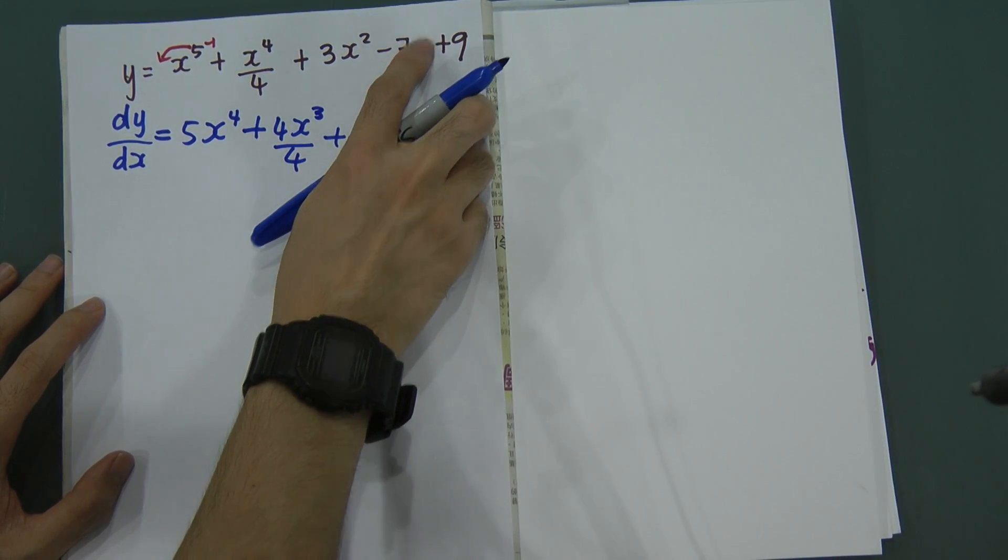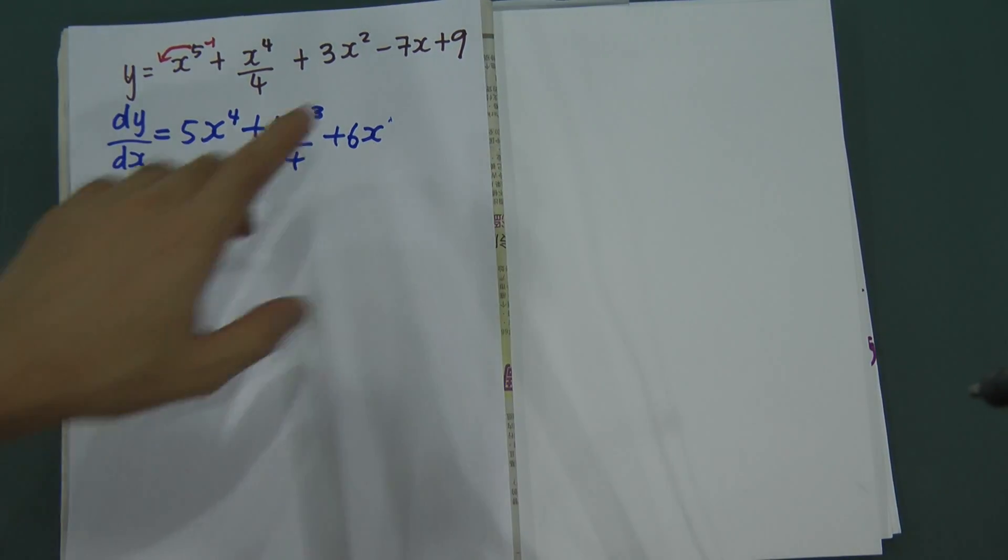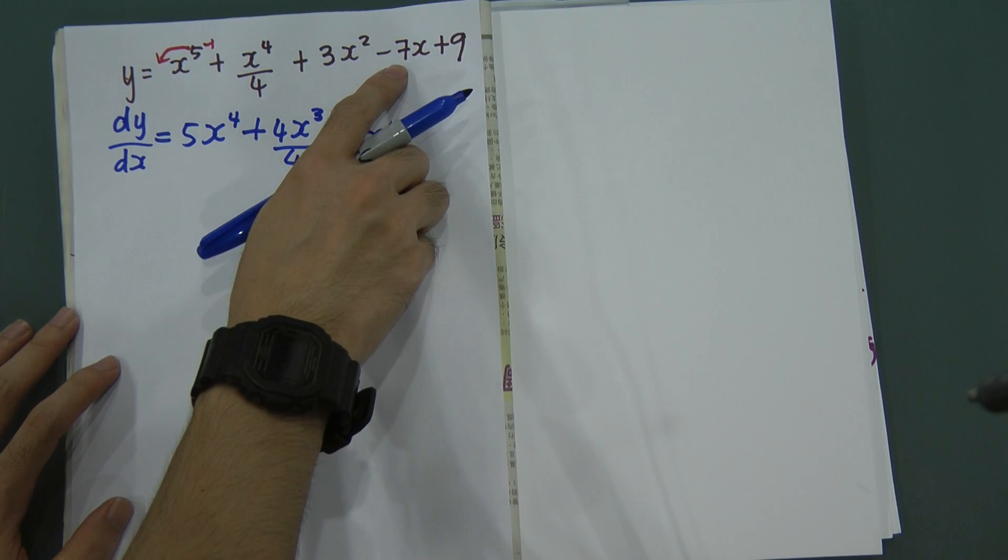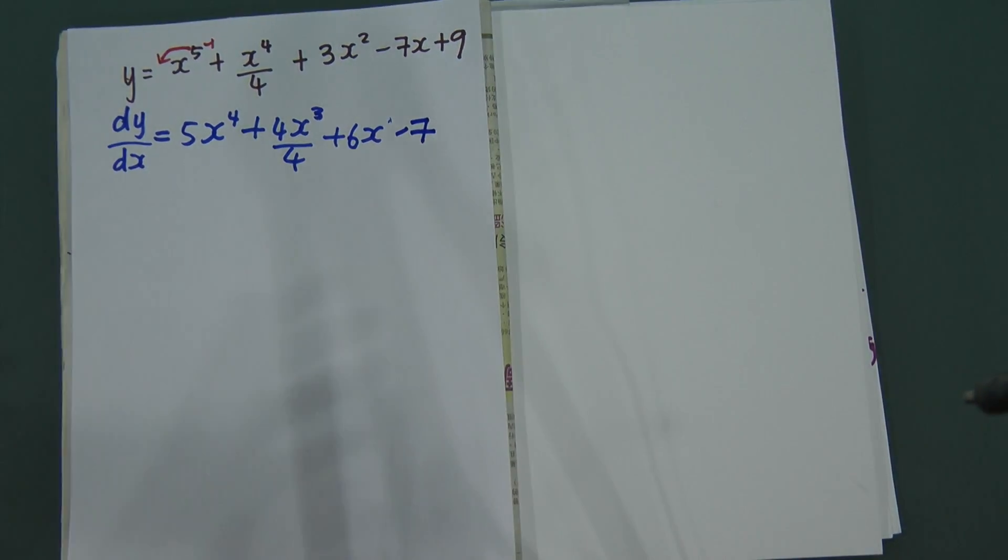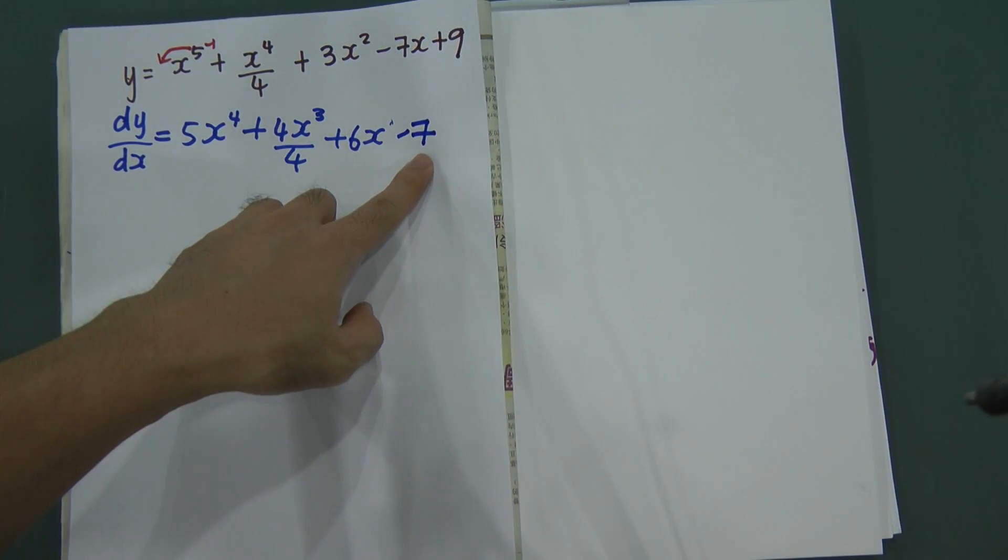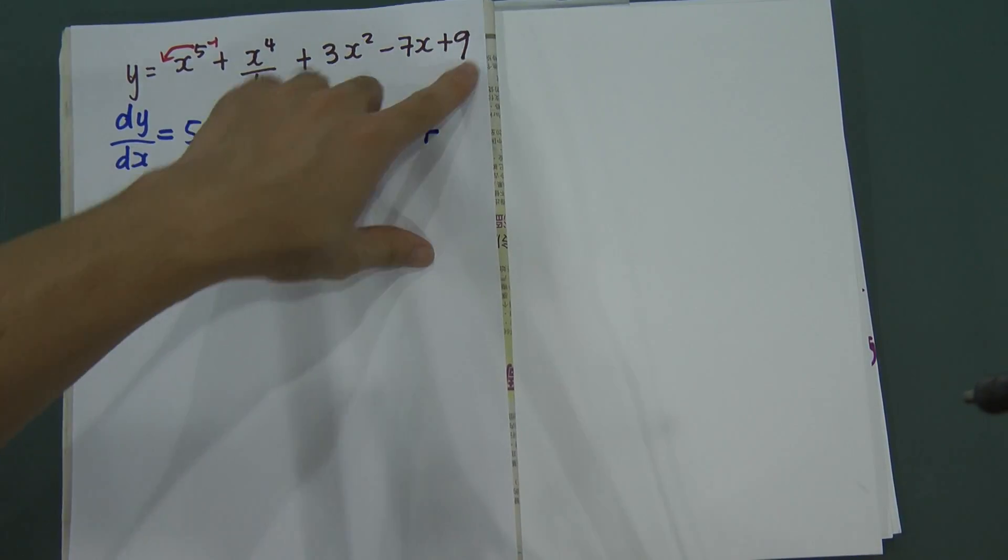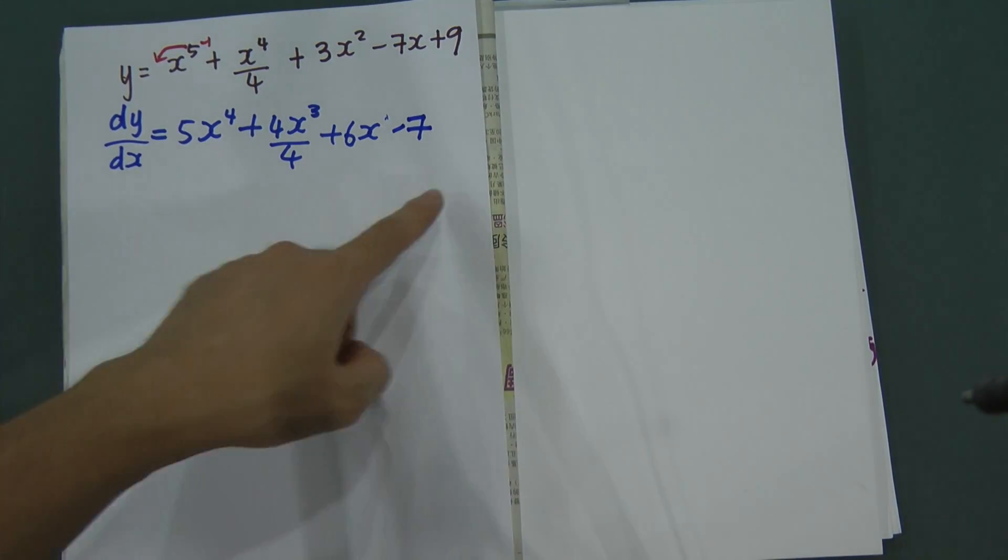Minus 7x. x here is 1. 1 minus 1 is power of 0. So when x power of 0 will equal to 1. So negative 7 multiple 1, we got negative 7. So normally how I remember is when you see negative 7x, you just write negative 7. You can ignore the x. And if you see the number without x one, it doesn't exist. So in dy dx, the dy dx is just like that.